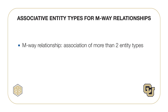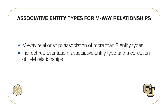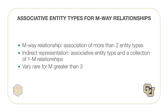An M-way relationship involves an association of more than two entity types. The Crow's Foot notation only supports binary relationships, so M-way relationships cannot be directly represented. Instead, an M-way relationship is indirectly represented as an associative entity type in a collection of one-to-many relationships. The typical value for M is three, as relationships involving more than three entity types are very rare in practice. Three-way relationships are not common in practice either, but important when occurring.